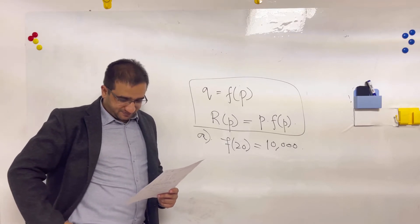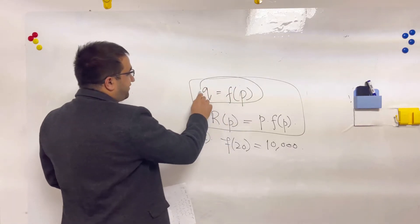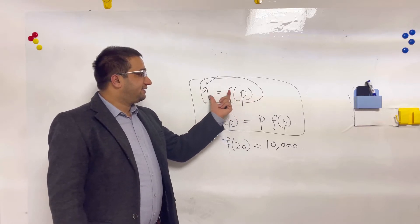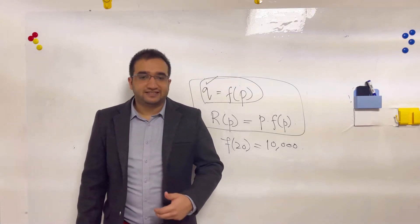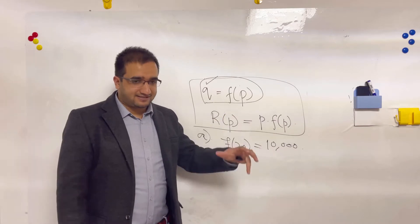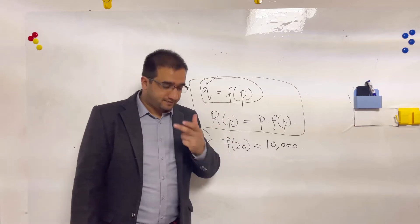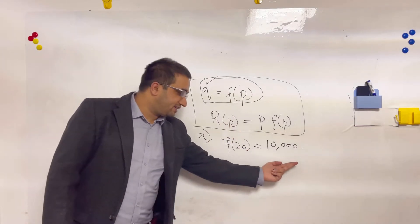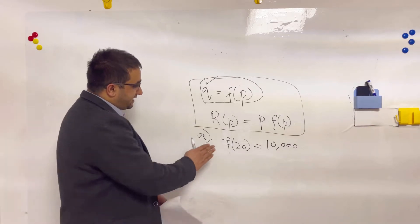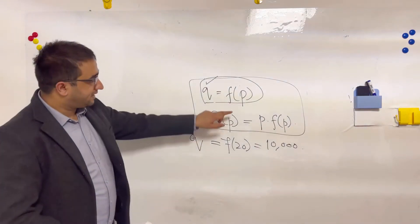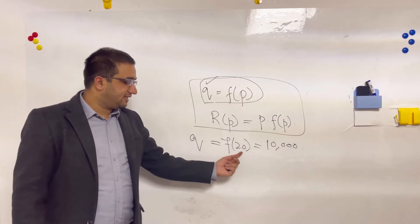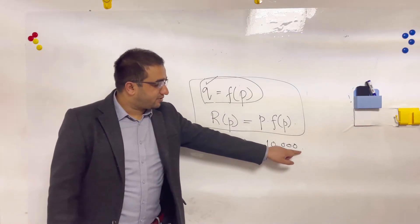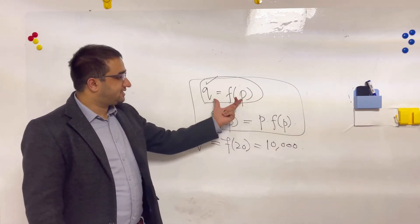F of P equals Q, and Q is the quantity of production depending on the price. If the price of the product is higher, the quantity will be less; if the price is less, the quantity will be higher. F of 20 simply means we used the price as 20 — the unit price is 20 — and if we set the price to 20, we can produce 10,000 units.